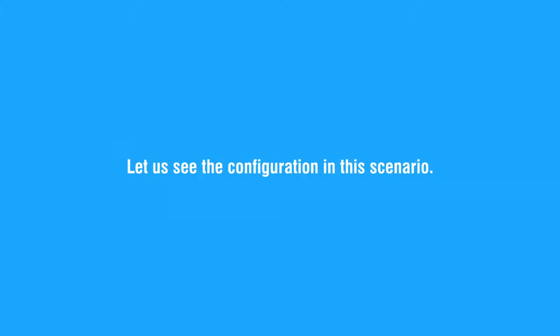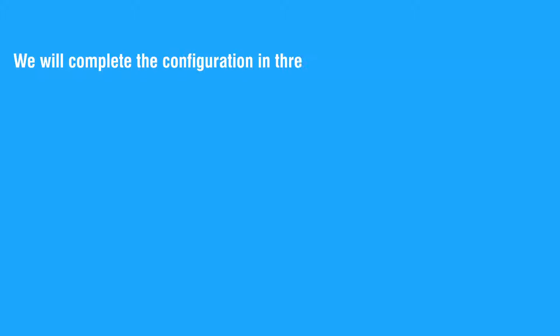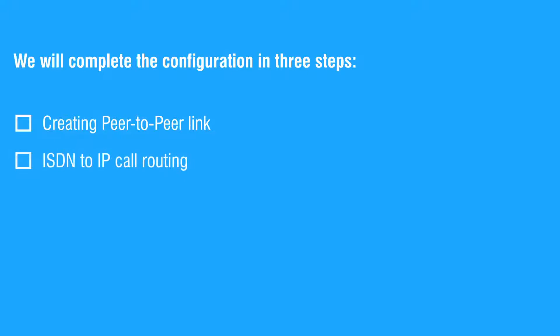Let us see the configuration in this scenario. We will complete the configuration in three steps: creating peer-to-peer link, ISDN to IP call routing, and IP to ISDN call routing.